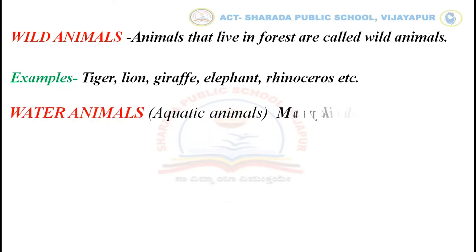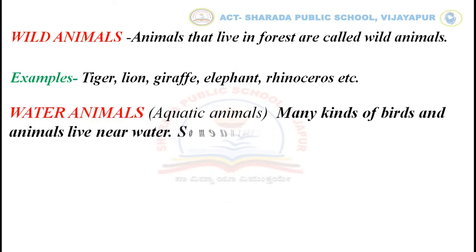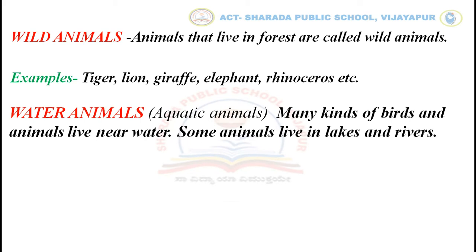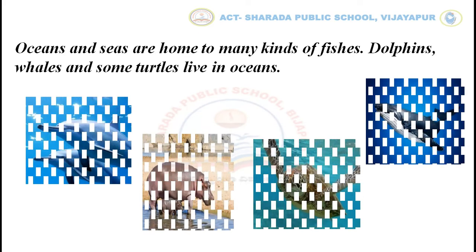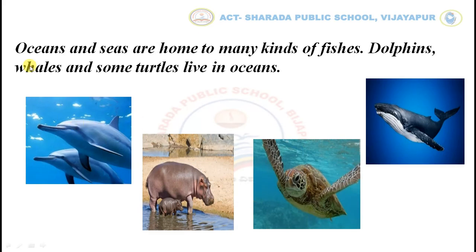Water animals: many kinds of birds and animals live near water. Some animals live in lakes and rivers. Oceans and seas are homes to many kinds of fishes. Dolphins, whales, and some turtles live in oceans.